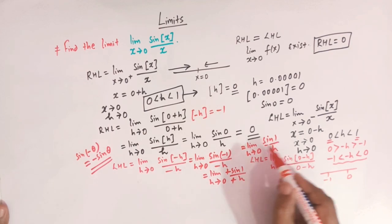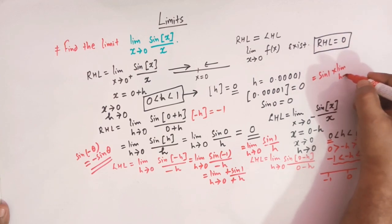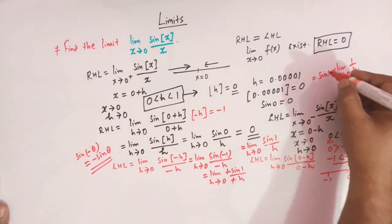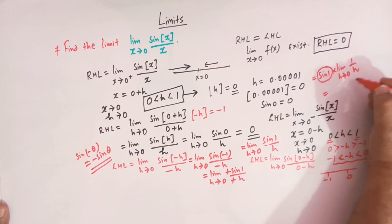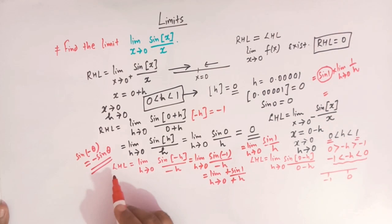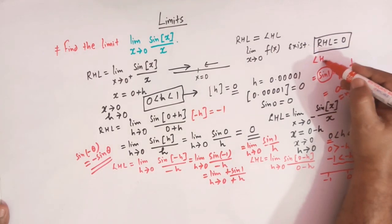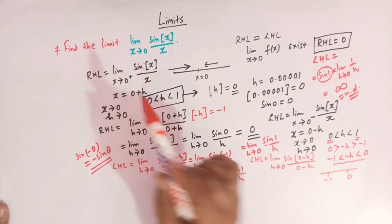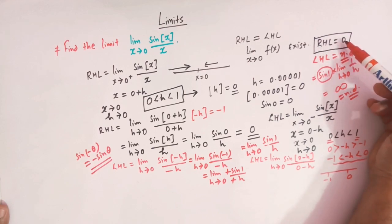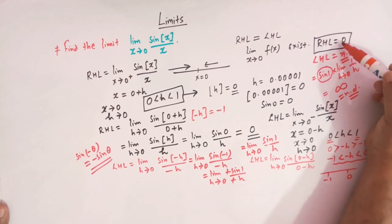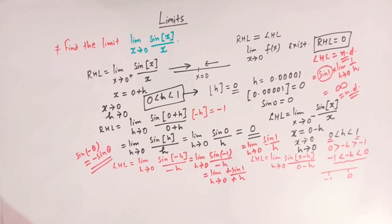If we take sine 1 outside the limit sign, we have sine 1 times limit h tends to 0 of 1 over h. Sine 1 is a finite quantity, but limit h tends to 0 of 1 over h is not defined. So the left hand limit does not exist. We conclude that the right hand limit exists and is finite, but the left hand limit is not defined, hence they are not equal. Therefore, the limit of this function when x tends to 0 does not exist.